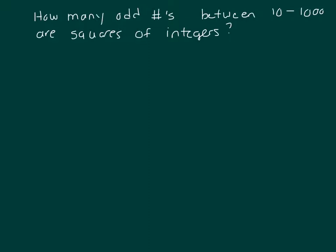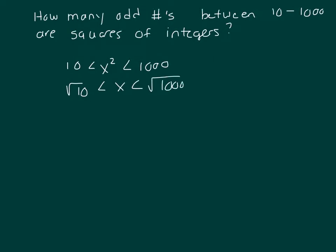Let's write an inequality to represent how many odd numbers between 10 and 1,000 are squares of integers. How do you write the square root of an integer? I'm going to write it as x squared — we're trying to figure out how many x's are in there. They're in between 10 and 1,000. Well, the square root of 10 — I'm solving for x now, so I'm taking the square root of both sides — and the square root of 1,000.